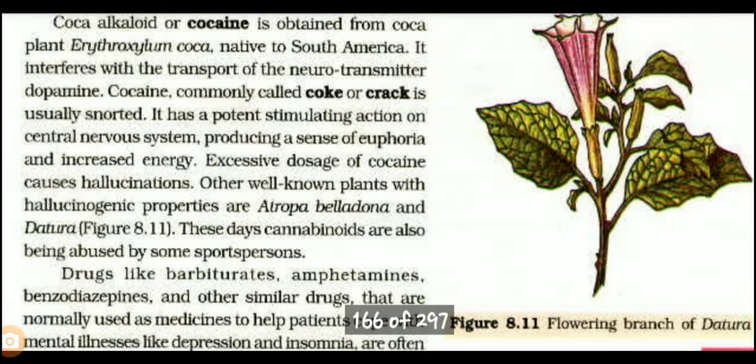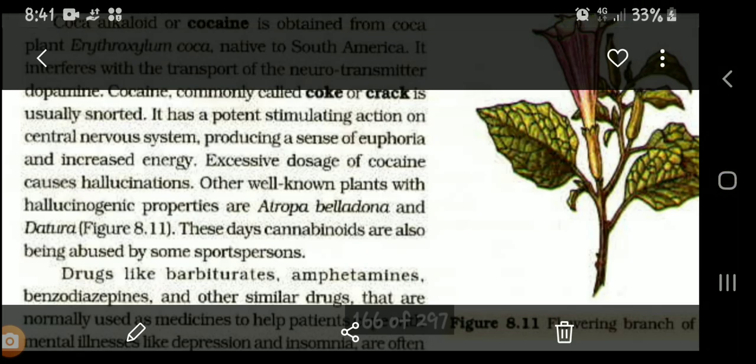Cocaine has a potent stimulating action on the central nervous system. After taking cocaine, a person feels a sense of euphoria and increased energy. Euphoria means a pseudo-feeling of happiness — a feeling of being on top of the world. Excessive doses of cocaine cause hallucinations. Well-known plants with hallucinogenic properties include Tropane, Belladona, and Datura.